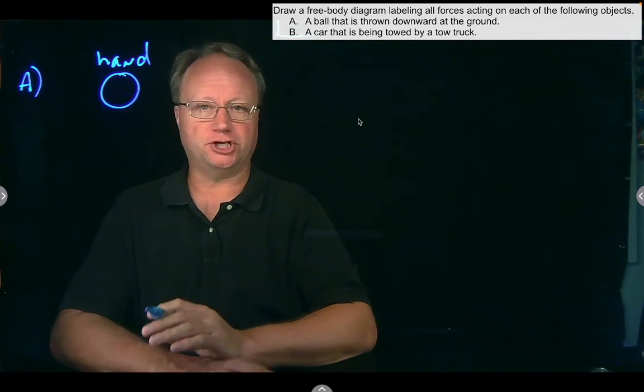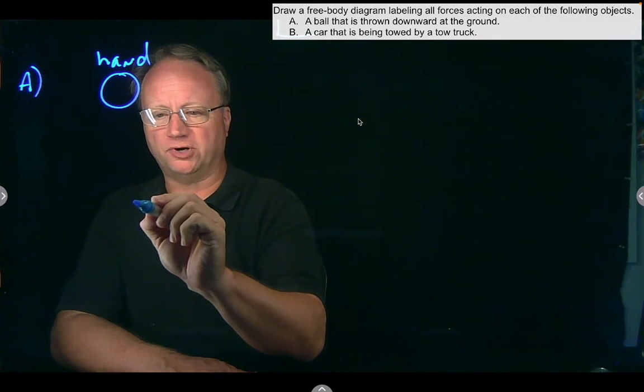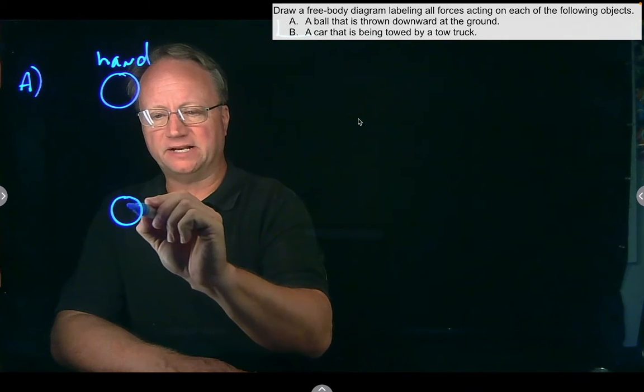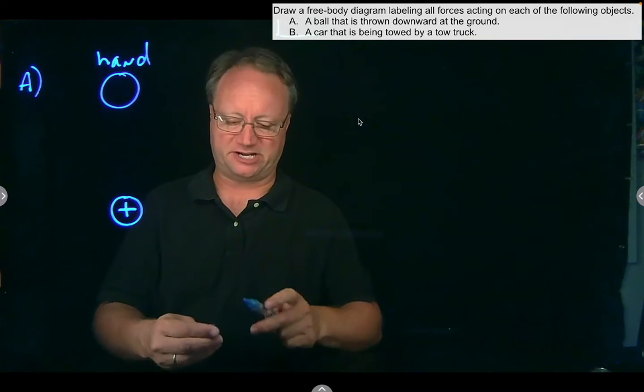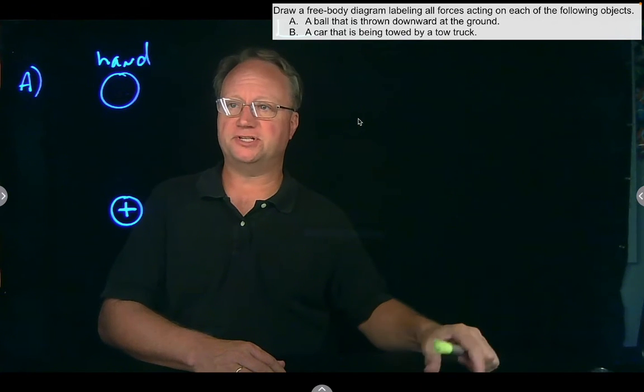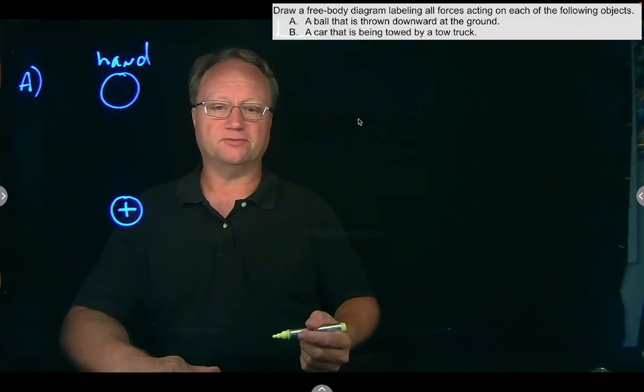Now, a free-body diagram just shows the forces, so then if I redraw the ball here, and I'm going to draw a little coordinate system, the same way we did in the last chapter when we were dealing with vectors of displacement and velocity. Now I'm going to label the forces.